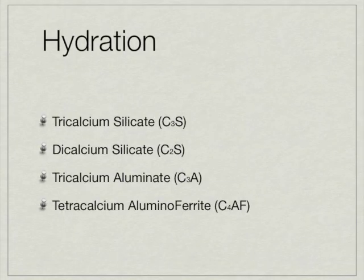Since cement plays such a key role in our concrete — without the cement we wouldn't have concrete — let's talk about what cement is. Cement is not a single chemical compound; it is, in fact, many chemical compounds. However, 90% of cement by weight is made up by four compounds: tri-calcium silicate, di-calcium silicate, tri-calcium aluminate, and tetra-calcium aluminoferrite. You may have heard of different types of cement: Type 1, Type 2, 3, 4, and 5. All of these cements will have these four major compounds, but they alter the percentages of each.